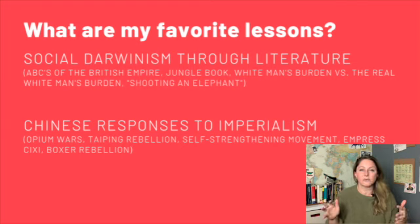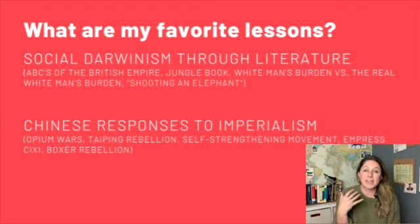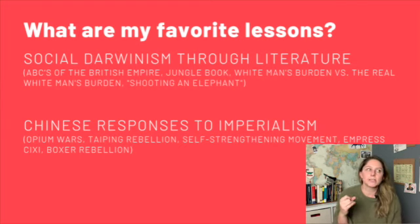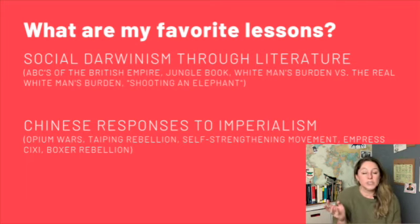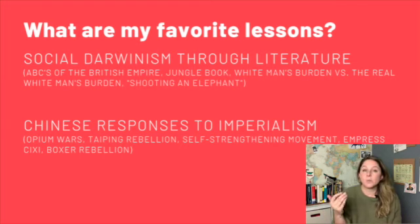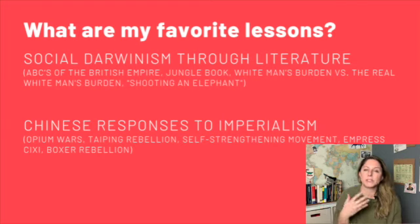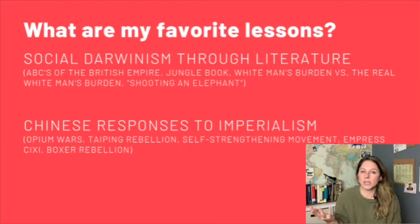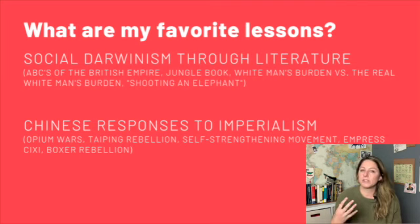We have to talk about where does white supremacy come from, where do these ideas about people of color being — air quotes — 'inferior' come from? Obviously they don't just come from the 1800s, but this is when we really see them in action. This PowerPoint walks kids through poems, advertising from the late 19th century, political cartoons, and short stories. There's a great one by George Orwell called 'Shooting an Elephant in Burma.' We talk about where this justification came from and why Europeans, Americans, and Japanese people felt so justified in subjugating other people.